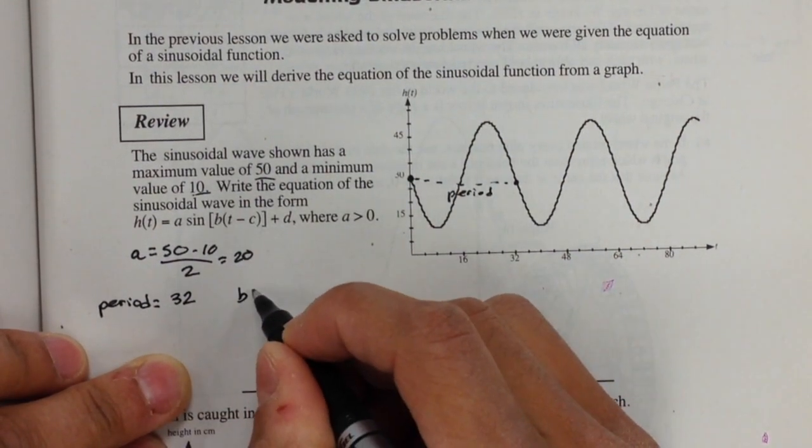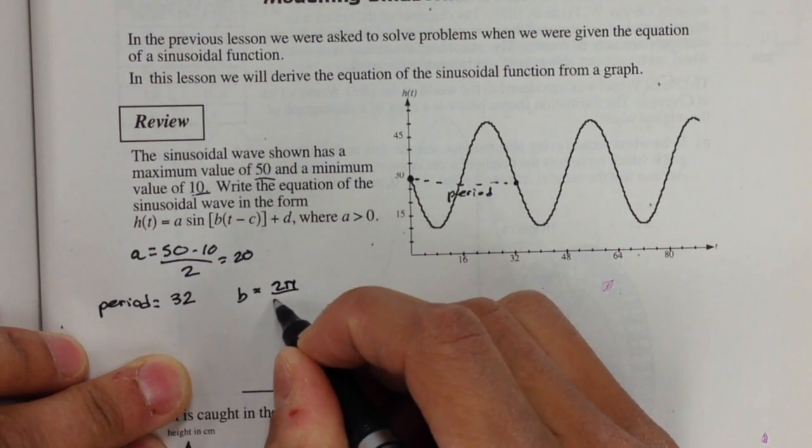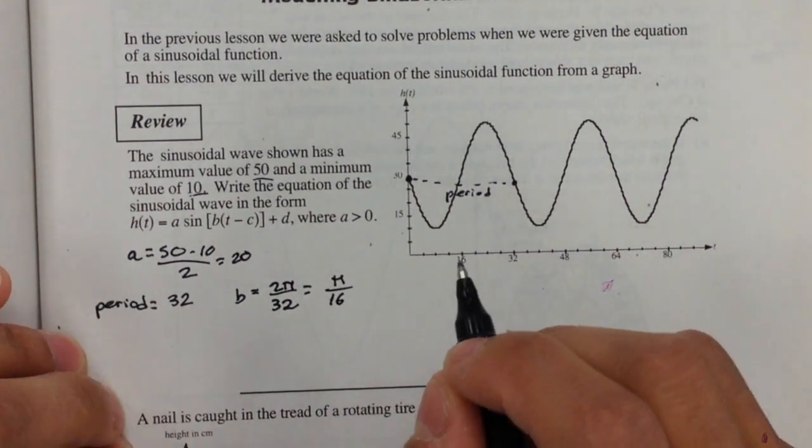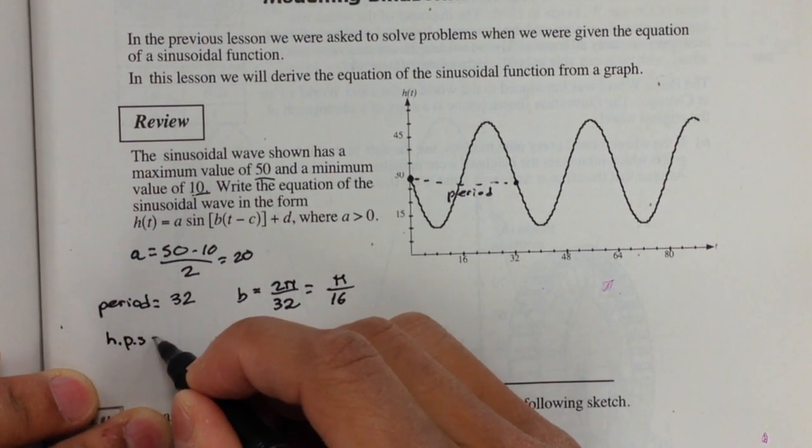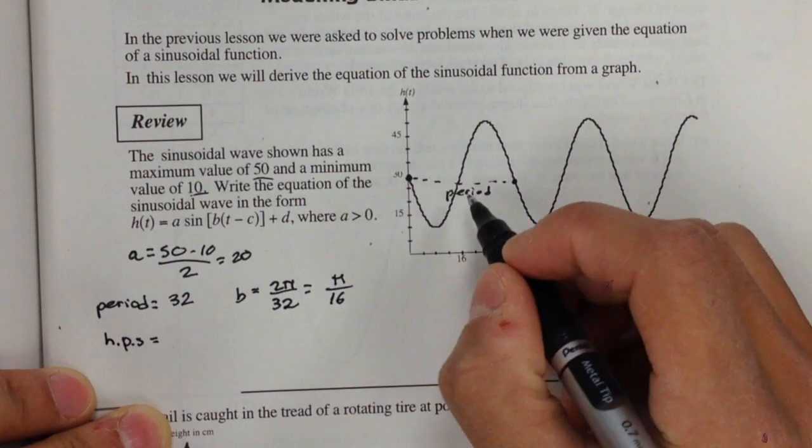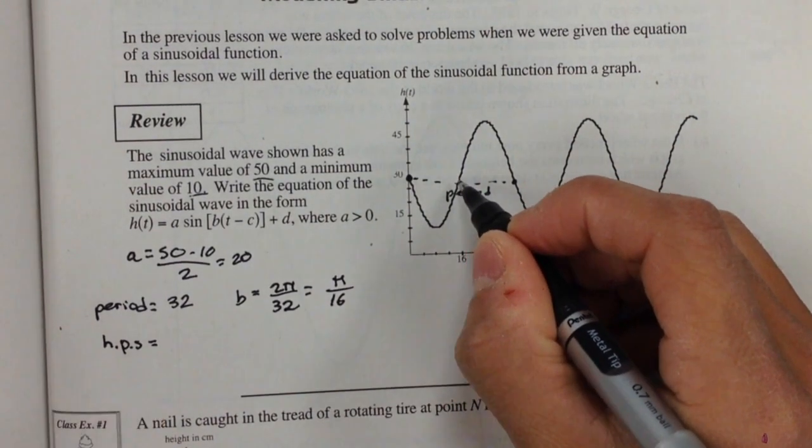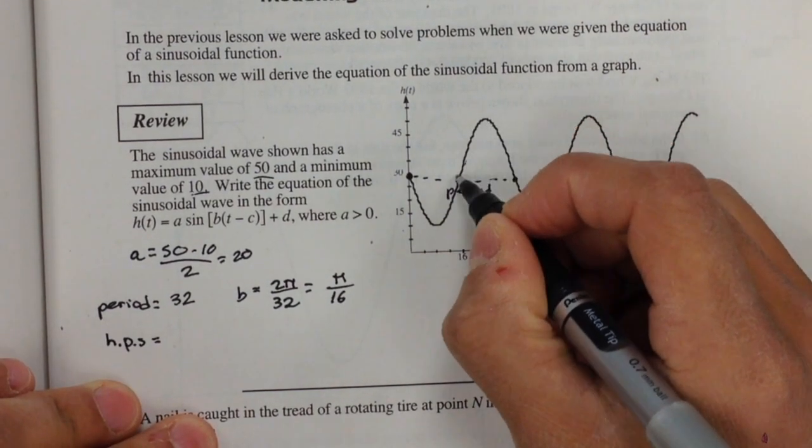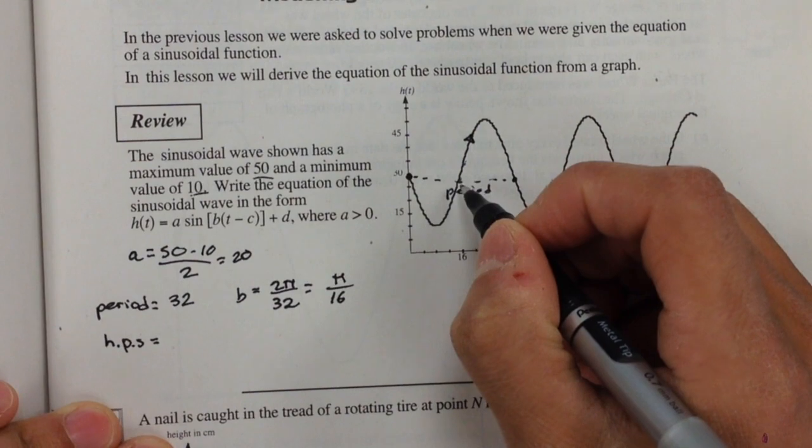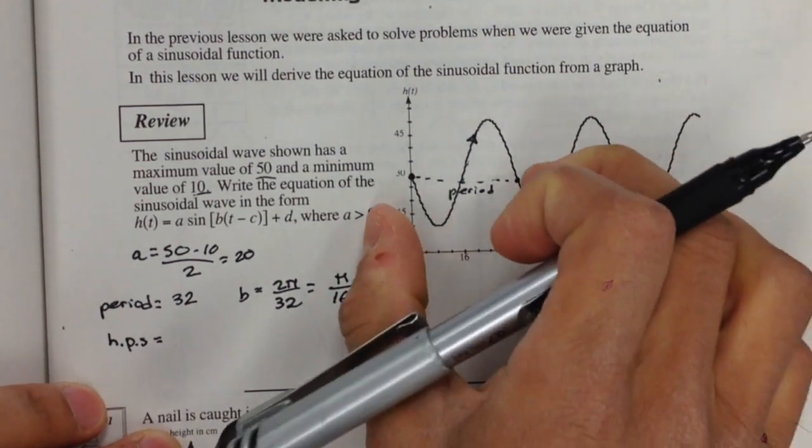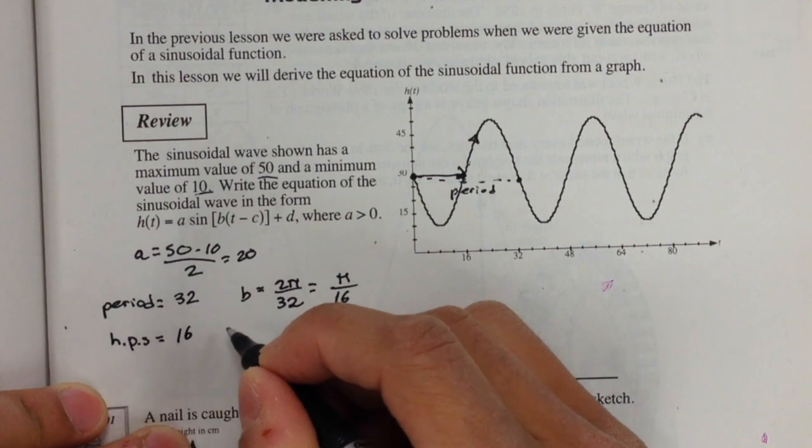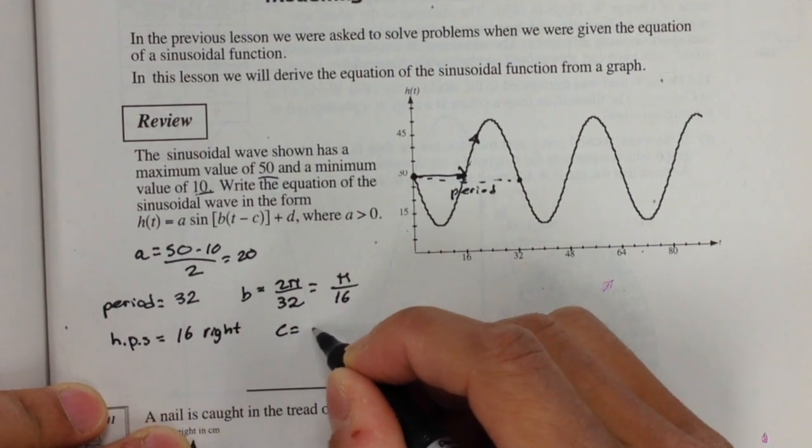If we're looking for our b value, then b is equal to 2π over 32 or π over 16 if we simplify. Now I want to find my horizontal frame shift. If this is a sine function, then we actually cross the y-axis at a midpoint as my sine wave is going up. So we know that my c value is equal to 16.